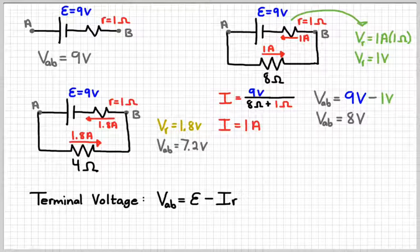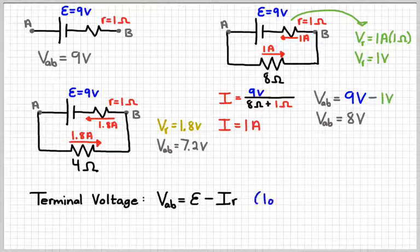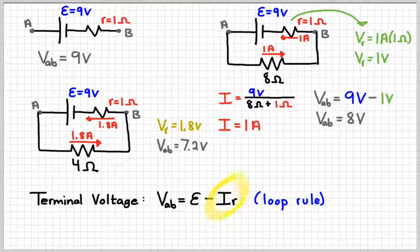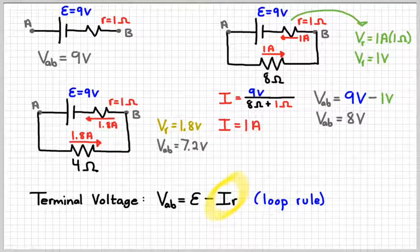Typically it's written like I times r, because those are the things that can be most directly measured. That's basically just a statement of Kirchhoff's loop rule. Voltages have to add up to zero, so if we've got some voltage across our little resistor, then the voltage across the outside of the battery is going to be smaller.